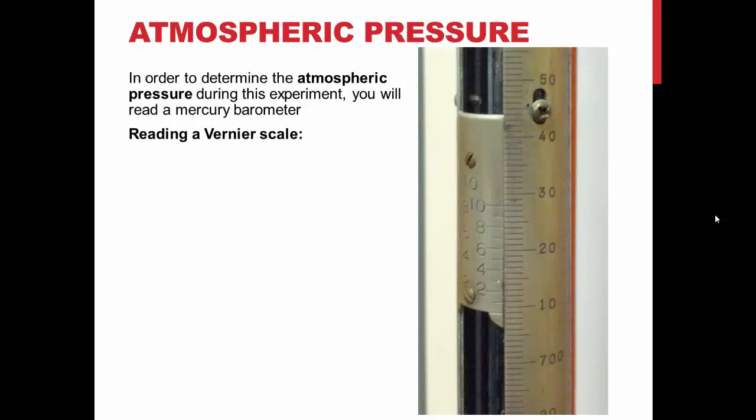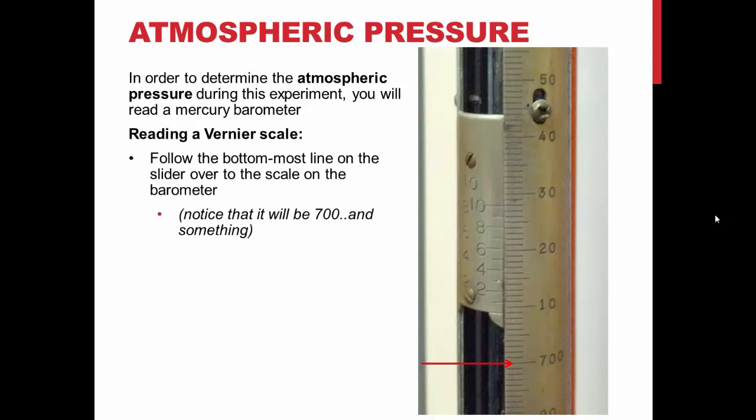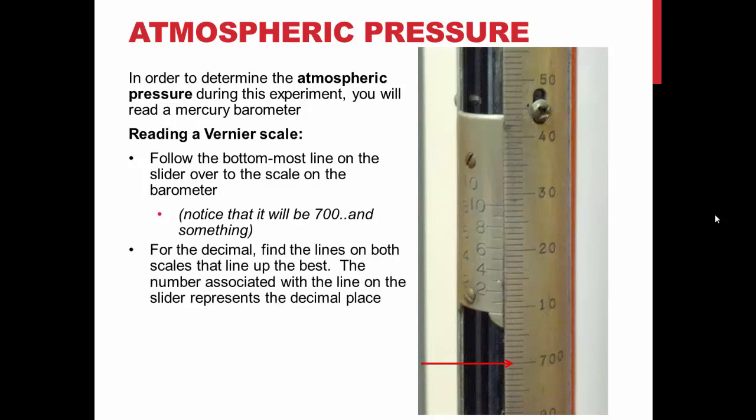Your first number will be read from the bottom of the scale, where the zero marker falls on the right-hand scale. In the picture shown, the zero falls between 708 and 709, making your first integer 708. This scale can be read to one decimal place, which can be found by looking to see which gradations on the right-hand scale line up best with the ones on the left-hand scale. In the picture, you can see that only the gradation for 0.9 lines up with any of the gradations on the right-hand side. This means your decimal place is 0.9, giving you an overall reading of 708.9 millimeters of mercury.